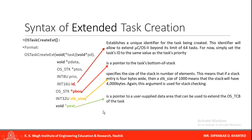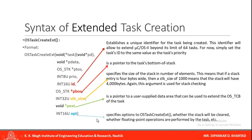Next is 'pext' — a pointer to a user-supplied data area that can be used to extend the OS task control block of the task. Next is a 16-bit unsigned integer 'opt', which specifies options for OS task create extended — such as whether the stack will be cleared or whether floating point operations are performed by the task. For extended task creation there are 5 extra arguments, making a total of 9 arguments.